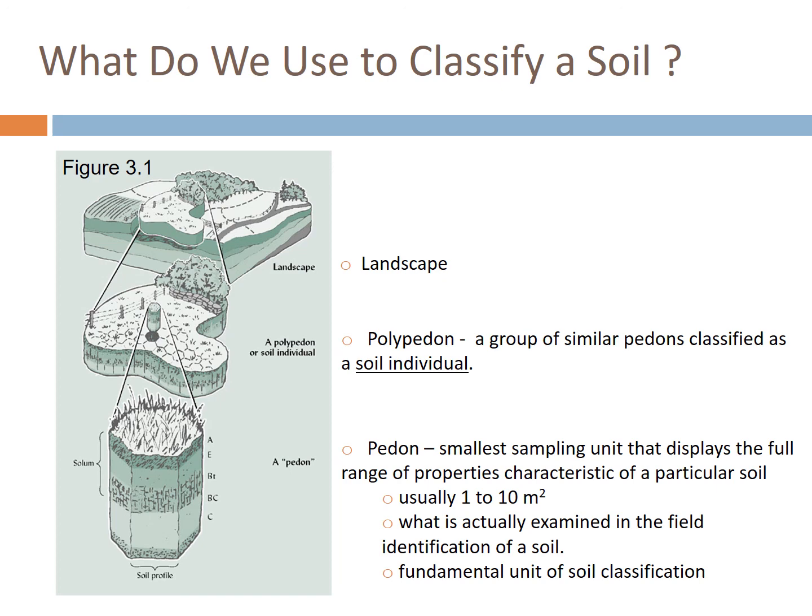We're going to describe a pedon, which is the small sampling unit that displays a full range of properties characteristic of an individual soil. Essentially, we dig a hole, look at six feet of soil, classify all the differences in it, and based on a set of characteristics we apply a taxonomic name — just like you would taxing out a plant in botany or an animal in biology. We've designed a classification system based on known properties.